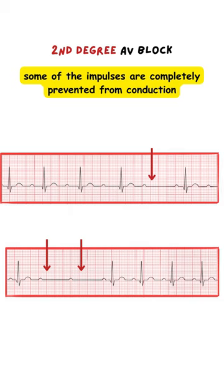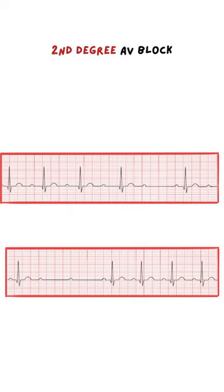One with progressively increasing duration of conduction until complete block occurs, and the other with completely prevented conduction of the impulses to the ventricles before a conduction occurs. They are called Wenckebach and Mobitz.